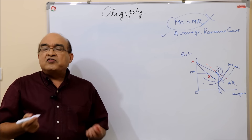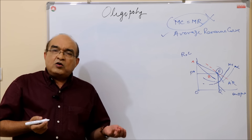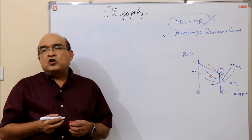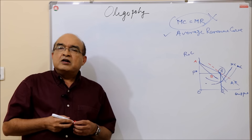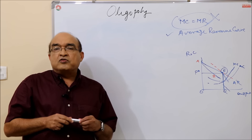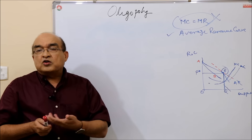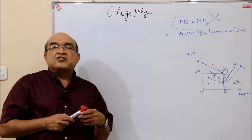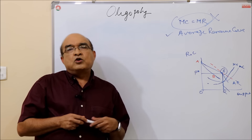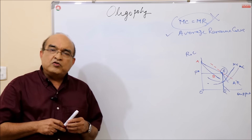This concludes the kinked demand curve analysis of oligopoly and the firm's output decision. We will also discuss other forms of non-collusive oligopoly, like the Cournot solution and the Stackelberg model, but those are for other videos. Thank you very much.